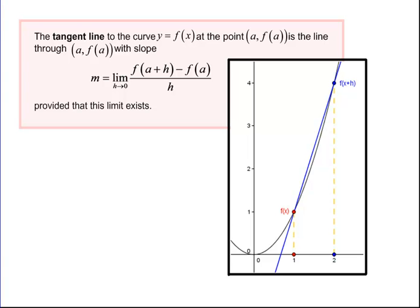Although the definition of the tangent line we gave in the previous video makes a lot of sense, it's actually not the one we're going to use most often. The reason is that although our example had a pretty simple limit, in most cases the algebra to simplify the 0 over 0 limit using the x approaches a definition for the slope of the tangent line is just too difficult. So how do we make the algebra simpler?